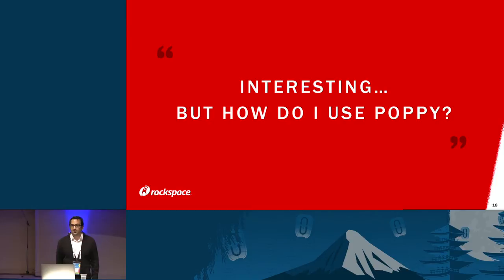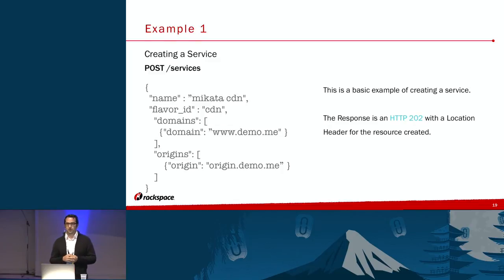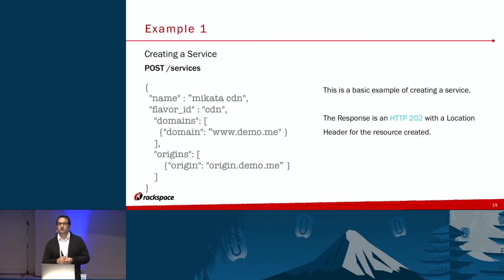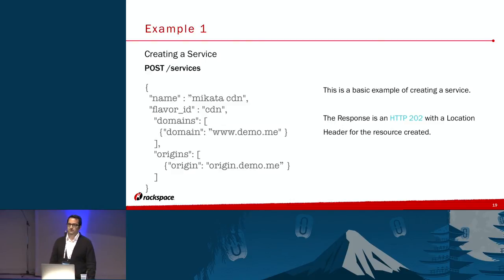How do I use Poppy? How do I create a service? You make a POST call to the services endpoint. Give it a name — that's purely for the user to recognize what they're working with — and give it a flavor ID. As an operator, you would have defined multiple flavors, and there is an endpoint to get the list of flavors. Then you give it the domain — in this example, www.demo.me — that's what customers would type into the URL bar. And you define the origin: it could be the IP address of your Nova instance, your load balancer, or another domain set up through DNS. This is an asynchronous call, so we return a 202 with a location header, which you can then poll to check the status.